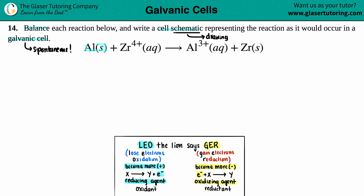We pick the substances that go together. We have aluminum solid, which goes with Al³⁺ aqueous because it's the same element. Then we have zirconium Zr⁴⁺, which goes with Zr solid. So we write those down: Al solid yields Al³⁺ aqueous, and Zr⁴⁺ aqueous yields Zr solid.